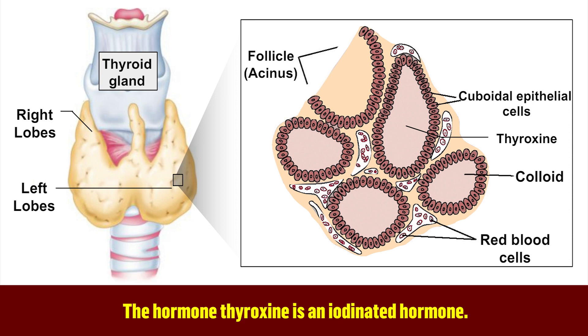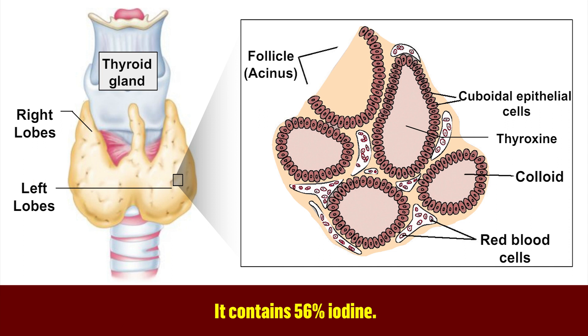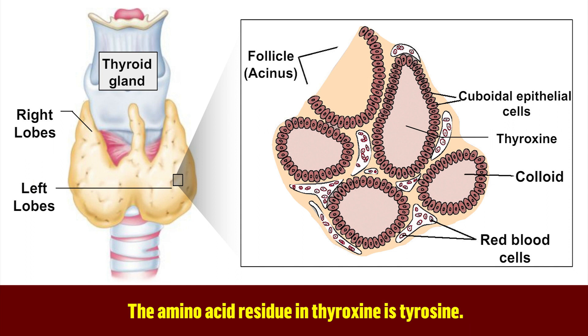The hormone thyroxin is an iodinated hormone. It contains 56% iodine, and the amino acid residue in thyroxin is tyrosine.